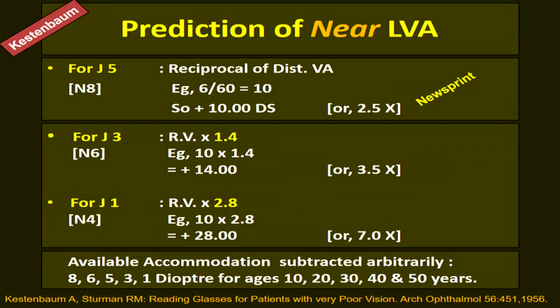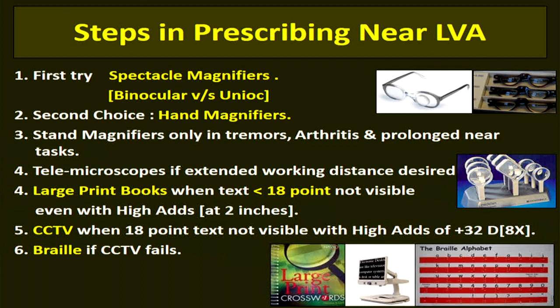The steps for prescribing near low vision aids are: first, try a spectacle magnifier, as it gives the widest field and is cosmetically acceptable; second choice is a hand magnifier — both can be combined for greater magnification. Give stand magnifiers for patients with tremors, arthritis, or those needing prolonged near tasks. Telemicroscopes are prescribed when extended working distance is desired. Offer large print books when text below 18-point is not visible even with high aids, CCTV when 18-point text is not visible, and Braille when CCTV also fails.